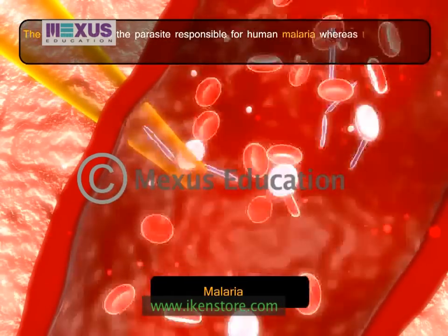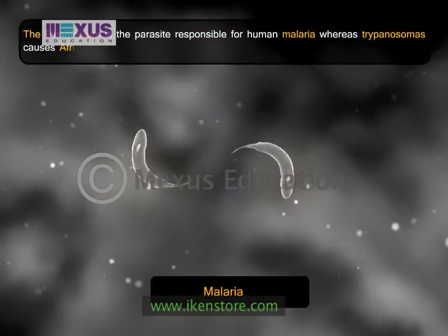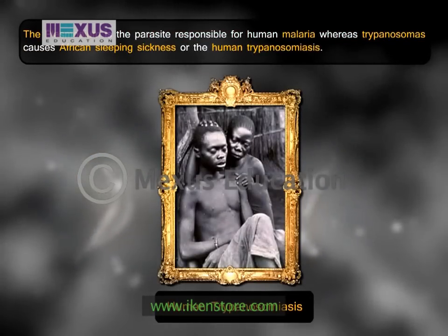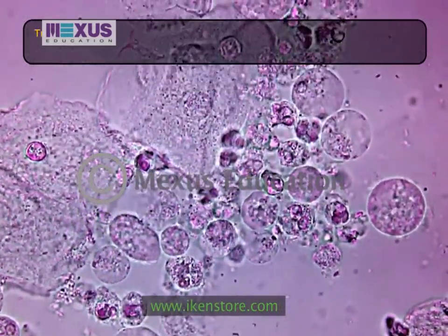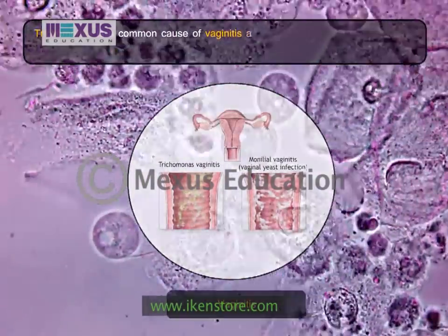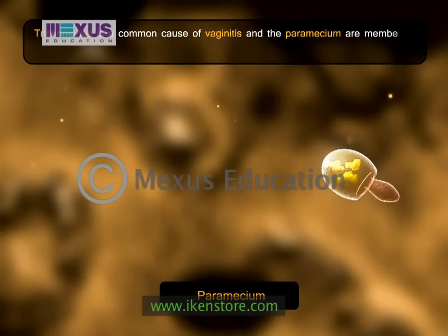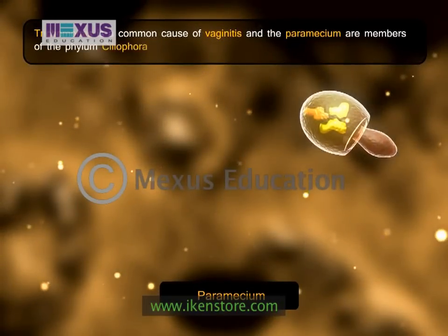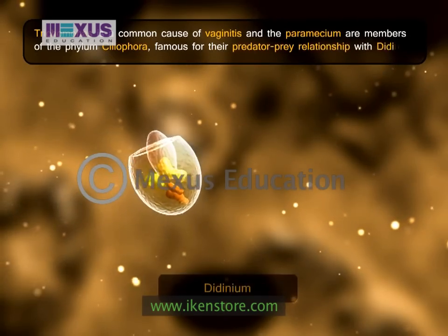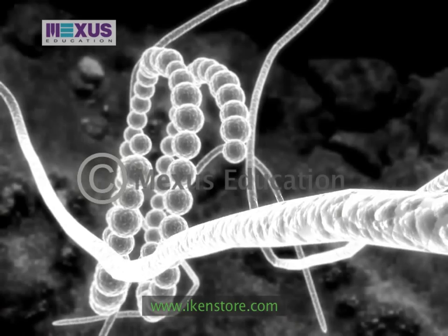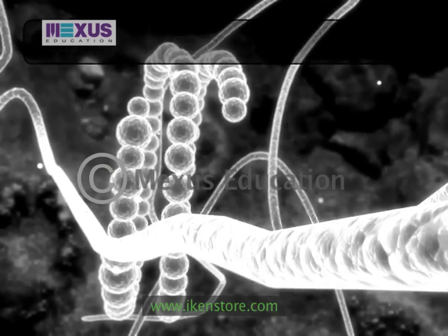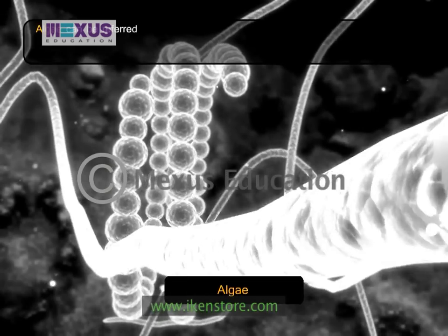The plasmodium is the parasite responsible for human malaria, whereas the trypanosoma causes African sleeping sickness, or human trypanosomiasis. Similarly, trichomonas is a common cause of vaginitis, and the paramecium are members of the phylum ciliophora, famous for their predator-prey relationship with didinium.